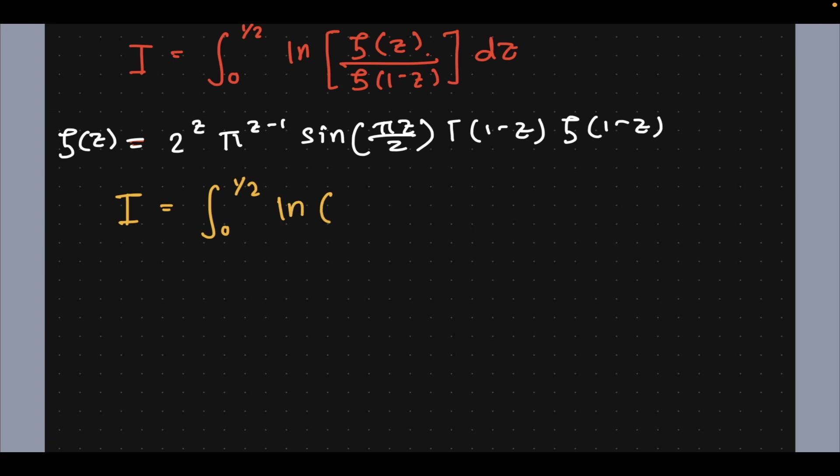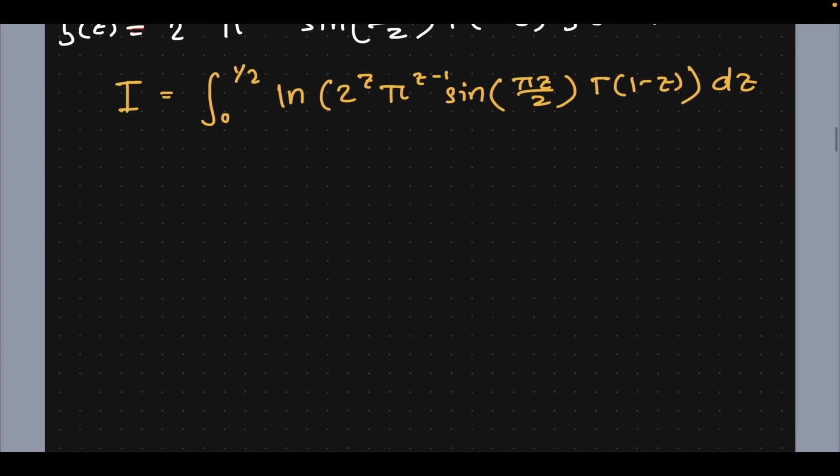So that's going to be 2^z times π^(z-1) times sine(πz/2) times gamma(1-z) with the dz. Now the simplest way of tackling this is to break it up into a bunch of integrals. By linearity we therefore have natural log of 2^z.